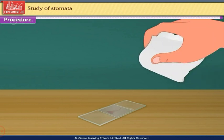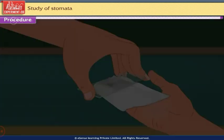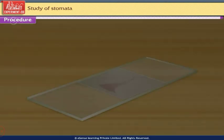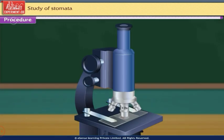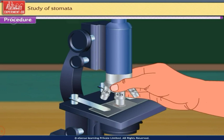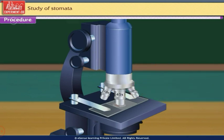Remove the excess stain and glycerine with the help of blotting paper. This is a temporary mount of a dicot leaf. Observe this temporary mount first under low power and then high power magnification of a compound microscope.